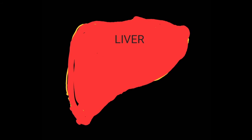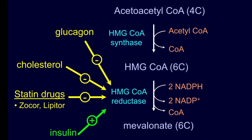A third regulatory mechanism of HMG CoA reductase in the liver involves the hormones insulin and glucagon. Insulin can promote the dephosphorylation of HMG CoA reductase through stimulating a phosphoprotein phosphatase; the outcome of this covalent modification is to activate the enzyme. On the other hand, glucagon can promote the phosphorylation of HMG CoA reductase and consequently inhibit the enzyme.